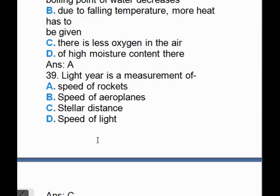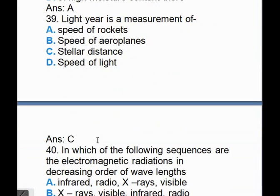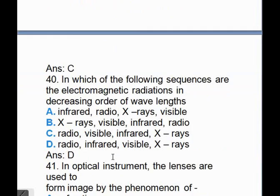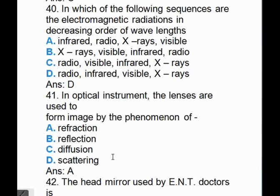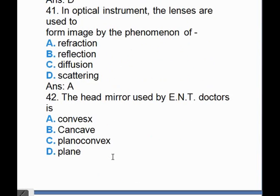In each of the following sequences are the electromagnetic radiation in decreasing order of wavelengths. The correct answer is D, radio, then infrared, then visible, then X-rays. In optical instruments, the lenses are used to form image by the phenomena of, answer is A, refraction.